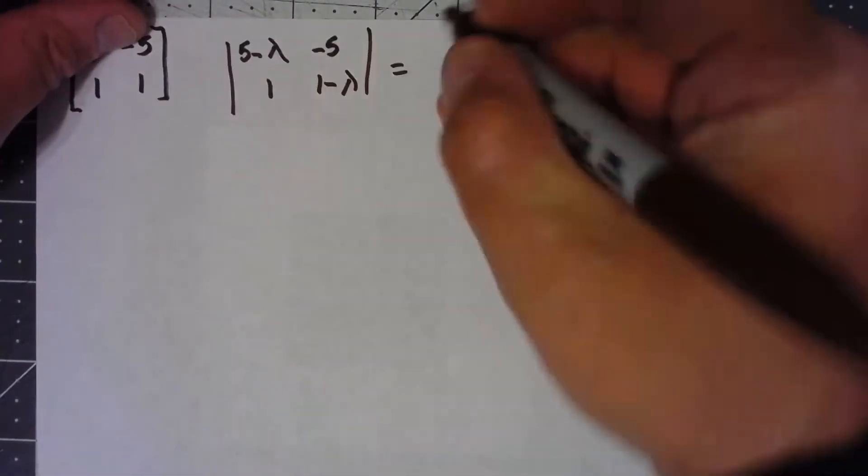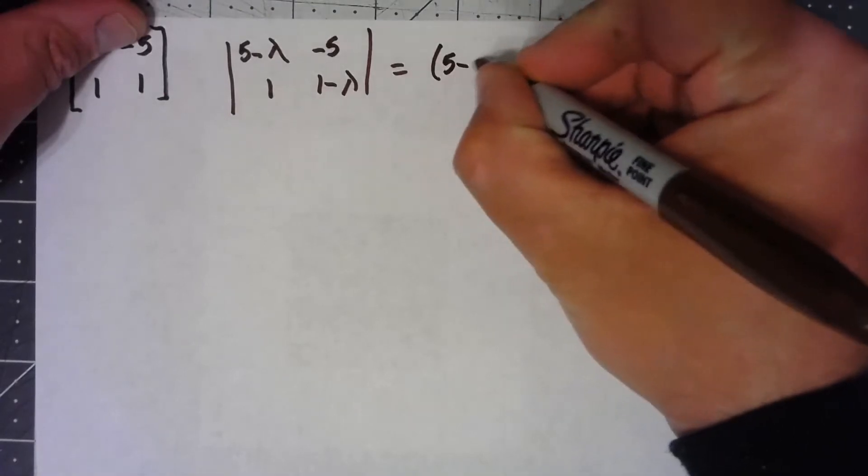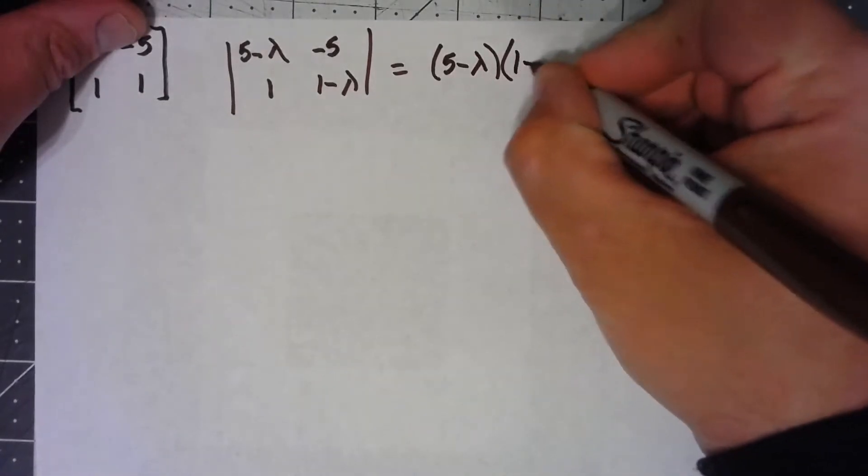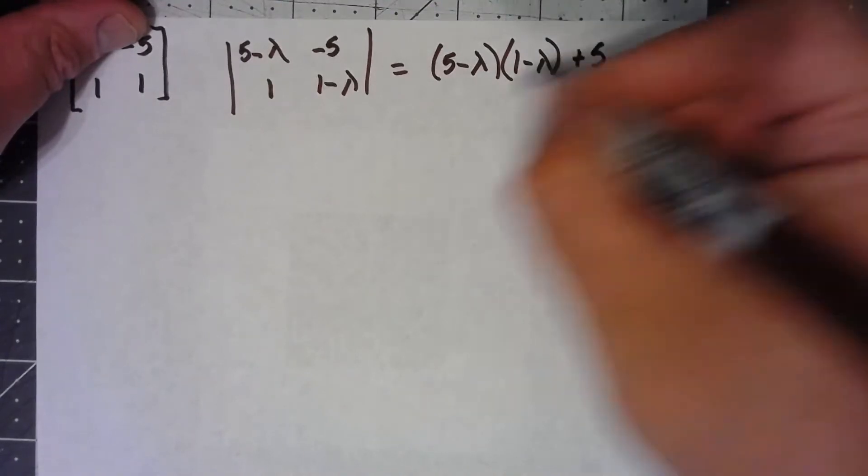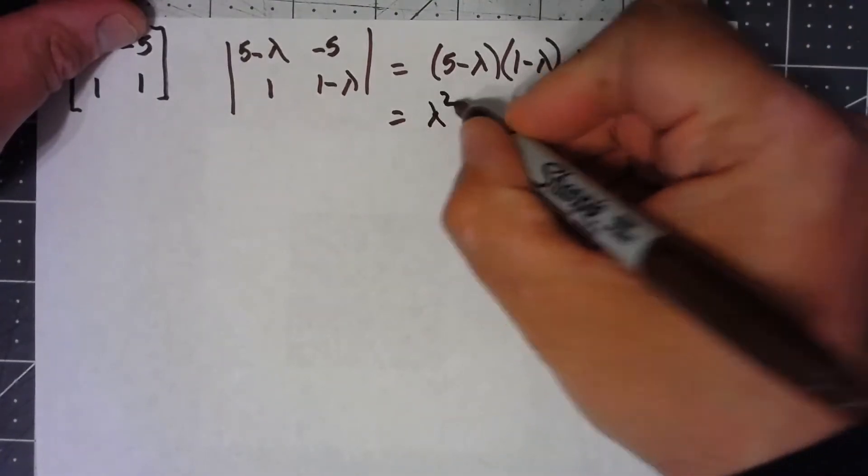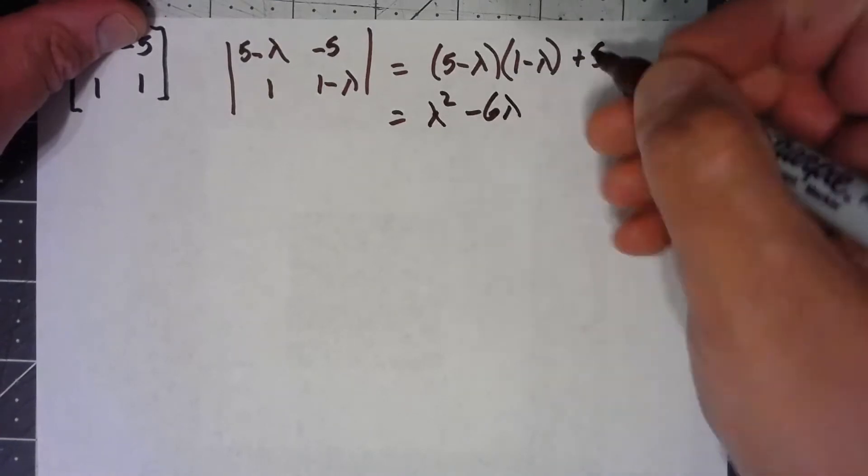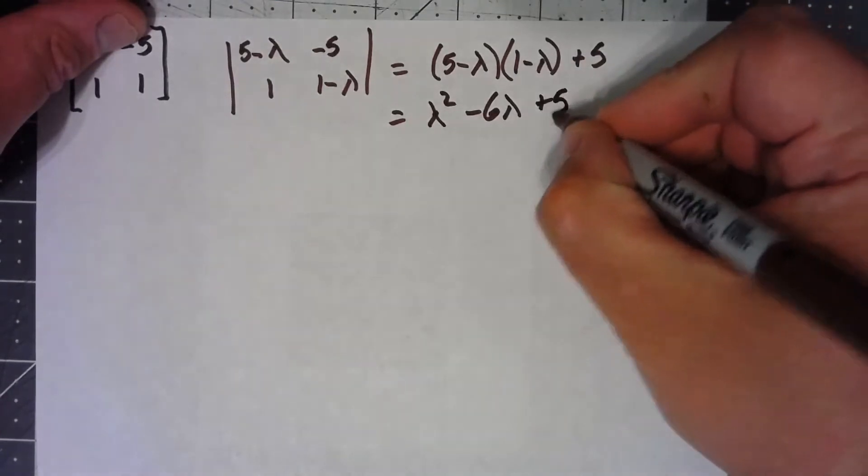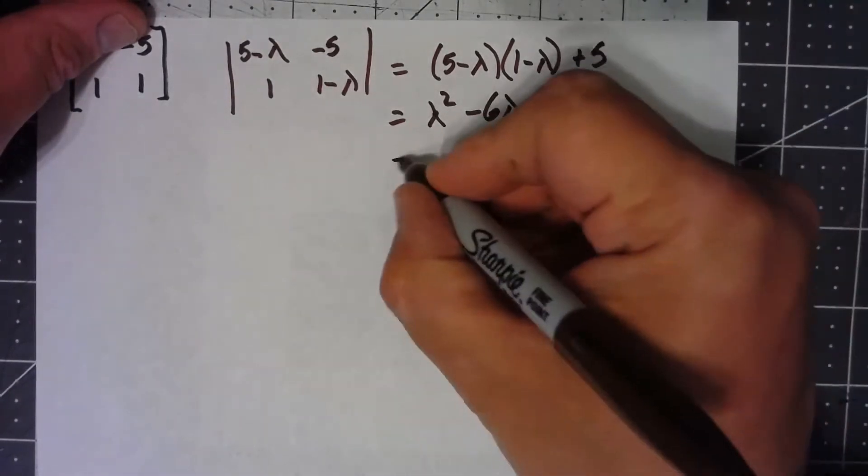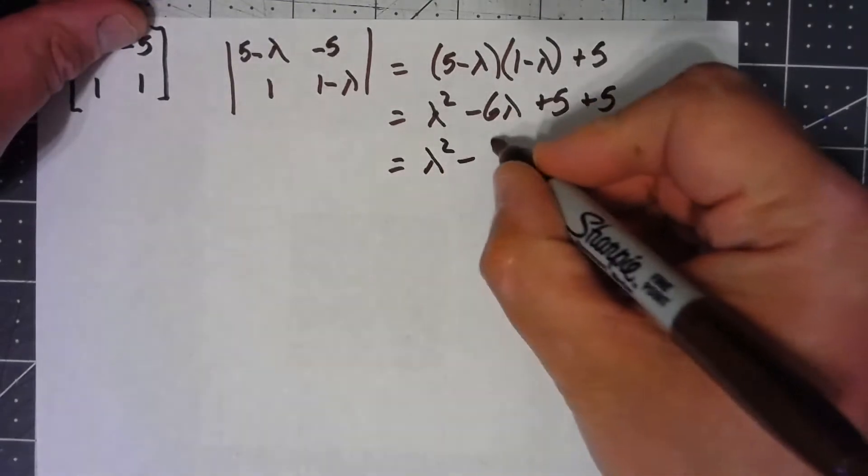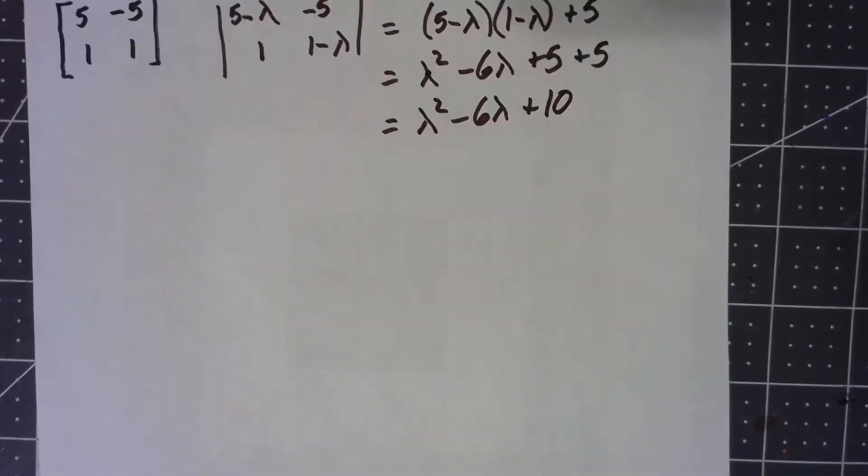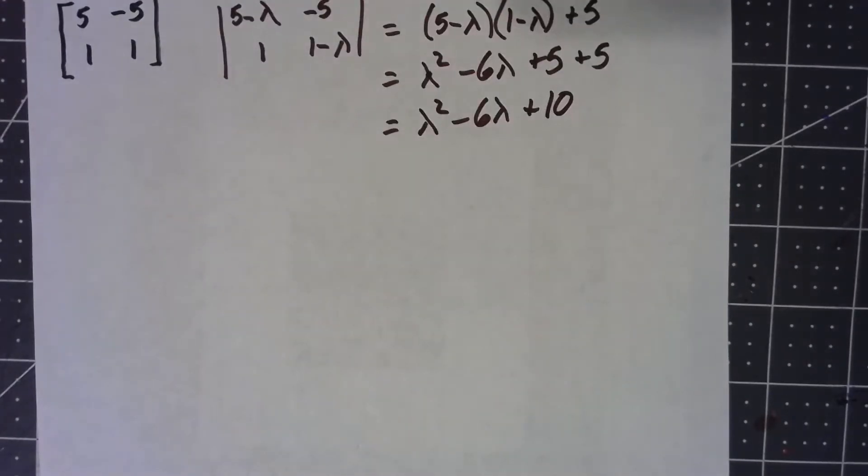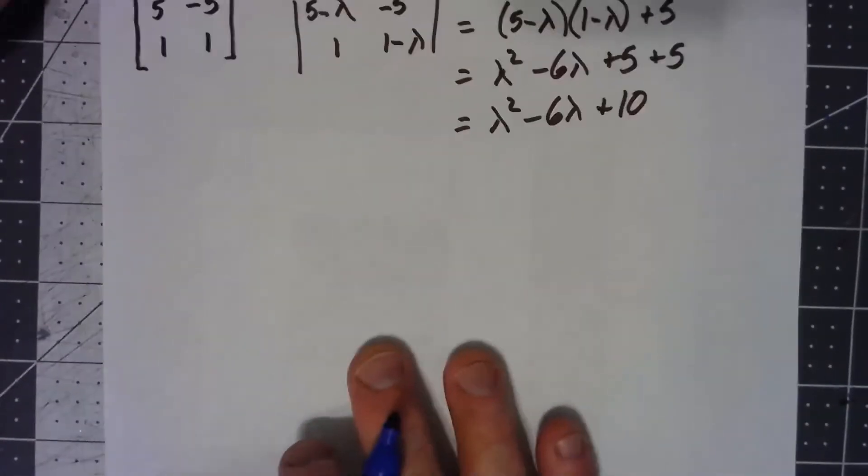So that's going to give me 5 minus lambda times 1 minus lambda minus a negative 5. So that's going to give me lambda squared minus 6 lambda plus 5 plus another 5. So we know that our eigenvalues are what make this thing equal to zero. So let's go ahead and set that equal to zero.